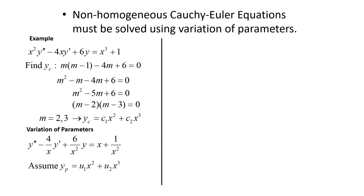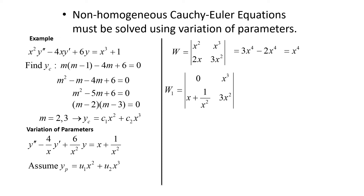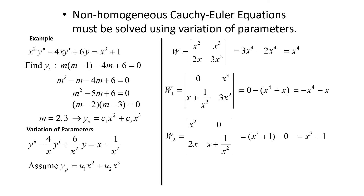Using Cramer's rule, we find the Wronskians. W of x² and x³ (with derivatives 2x and 3x²) equals 3x⁴ - 2x⁴ = x⁴. For W1, replacing the first column gives 0 - (x⁴ + x) = -x⁴ - x. For W2, replacing the second column gives x³ + 1 - 0 = x³ + 1.